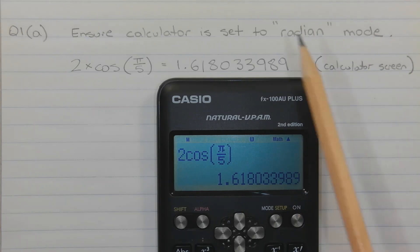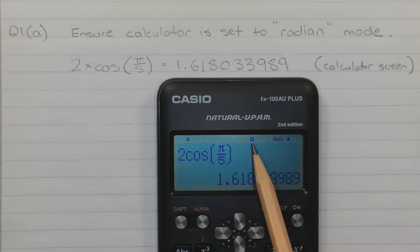The first thing to make sure of is that the calculator is set to radian mode. Depending on the model of calculator, there should be a letter R appearing somewhere on the screen, and in this case, it appears here. If the calculator is set to degrees, there'll be a letter D instead.